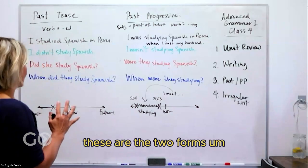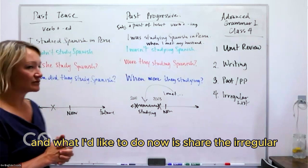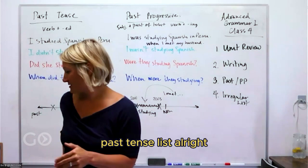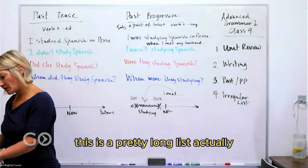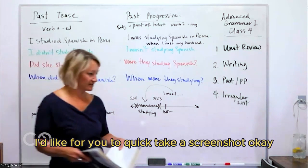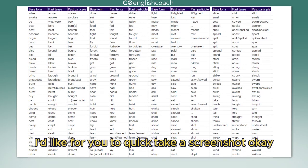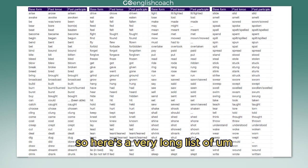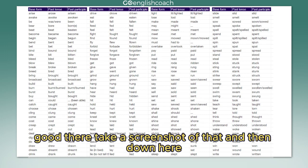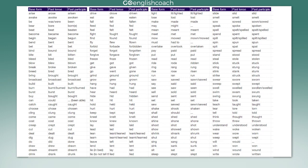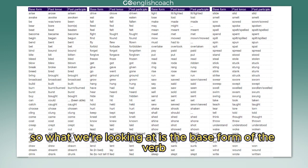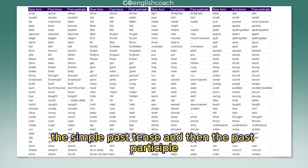Now I'd like to share the irregular past tense list. It's a pretty long list, so go ahead and take a screenshot. Here's a very long list of irregular verbs in English. What we're looking at is: the base form of the verb, the simple past tense, and the past participle.